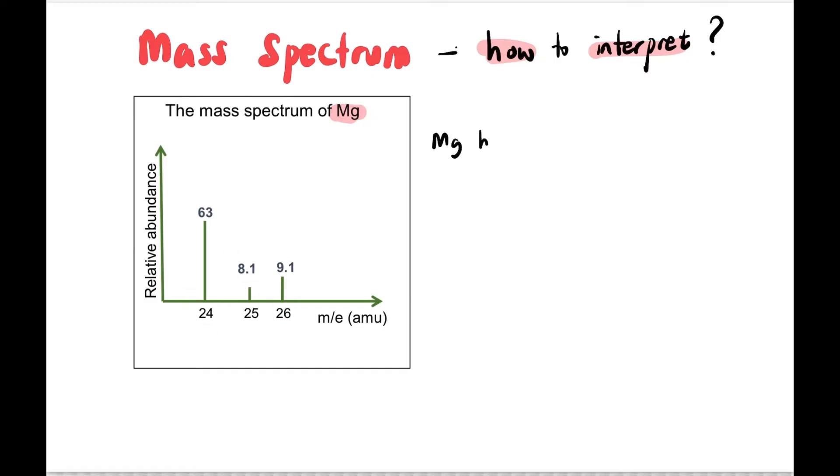From this chart we can determine that magnesium has 3 isotopes: Mg-24, Mg-25, and Mg-26, based on the horizontal axis of the graph showing 24, 25, and 26.